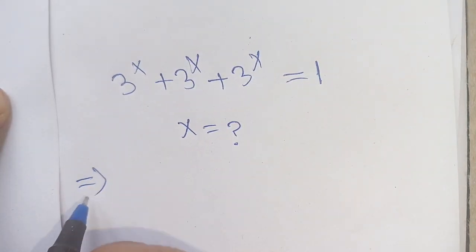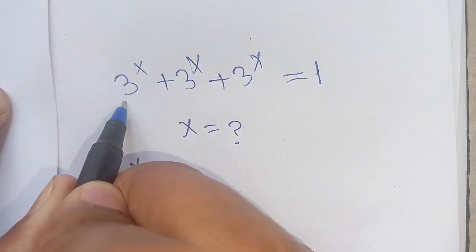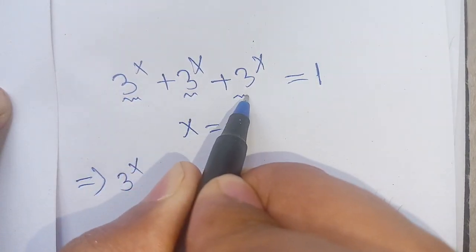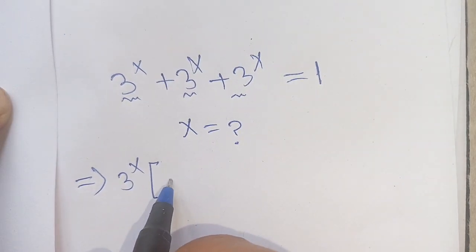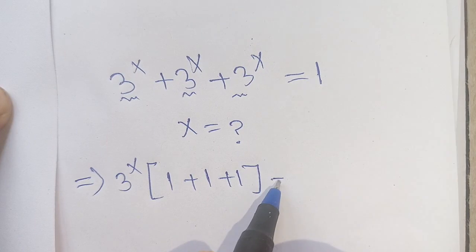Let us solve this. We can write this as 3^x, we can take common from these terms, and we get 3^x times (1 + 1 + 1) = 1.